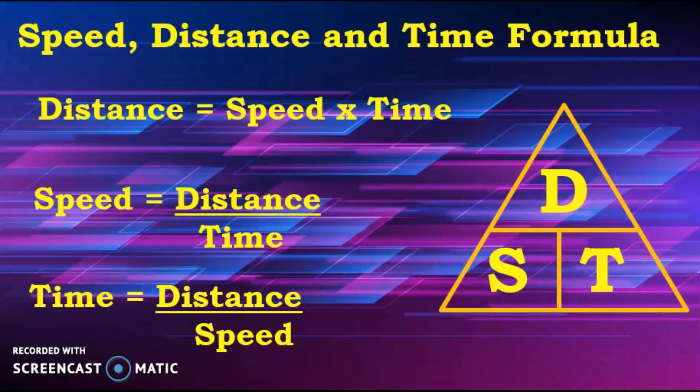So to recap: distance equals speed times time. If speed is missing, that is distance divided by time. If time is missing, that is distance divided by speed. In the magic triangle, D is always on top, then S and T on the bottom.